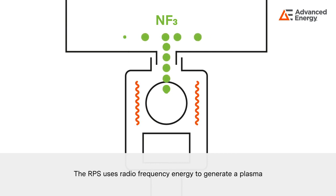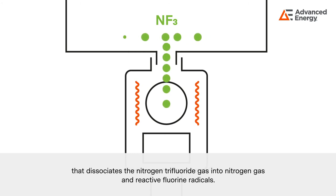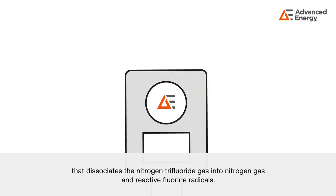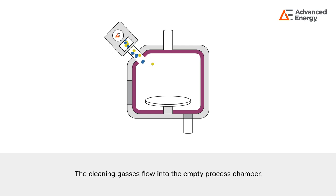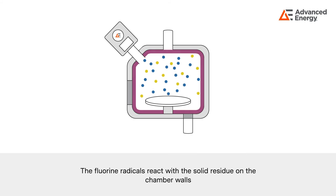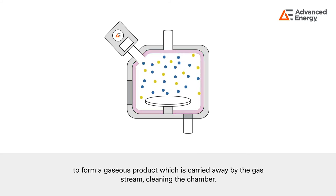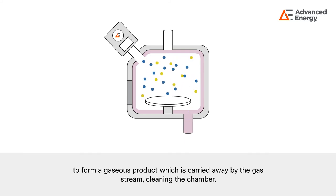The RPS uses radio frequency energy to generate a plasma that dissociates the nitrogen trifluoride gas into nitrogen gas and reactive fluorine radicals. The cleaning gases flow into the empty process chamber, where the fluorine radicals react with the solid residue on the chamber walls to form a gaseous product, which is carried away by the gas stream, cleaning the chamber.